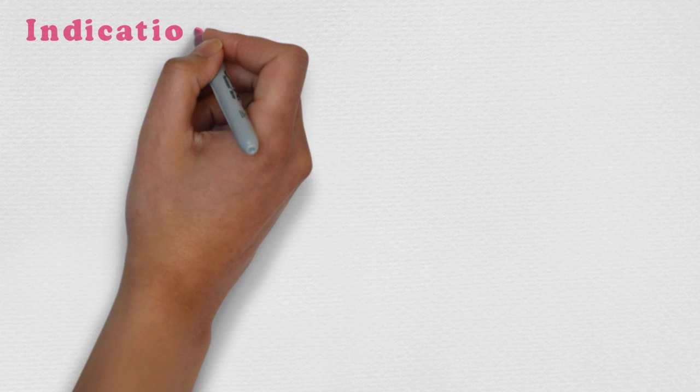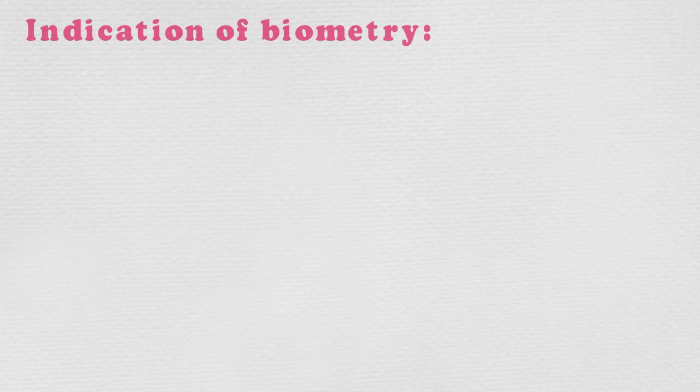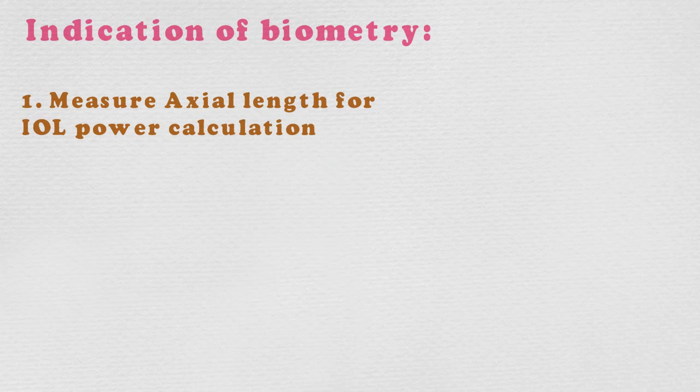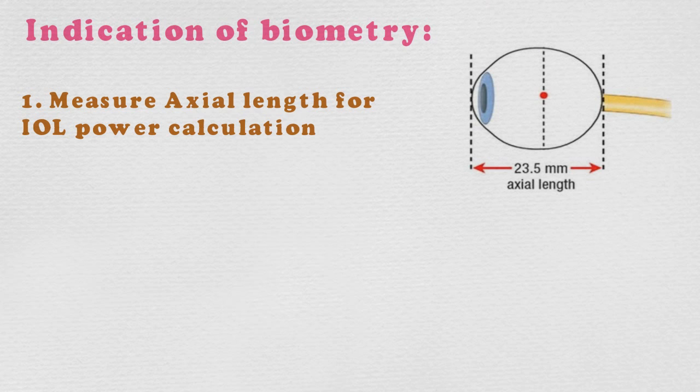Now let's talk about the indication of biometry. Number first: measure axial length for IOL power calculation. This is basically done before cataract surgery by the optometrist. There are some formulas to measure IOL power, and in those formulas axial length is required to find out the IOL power.